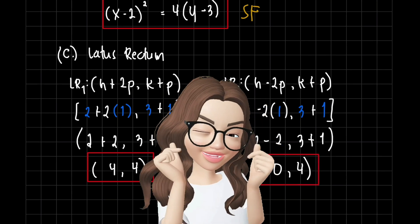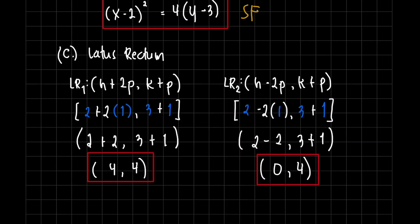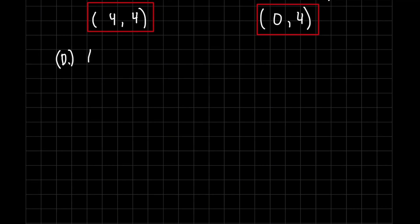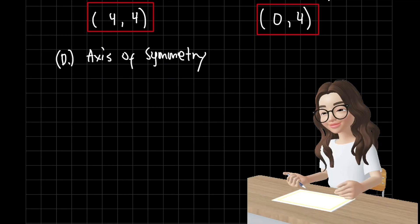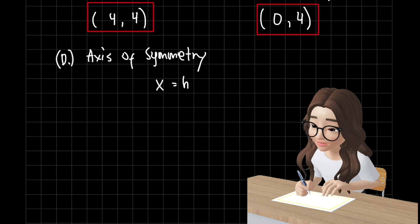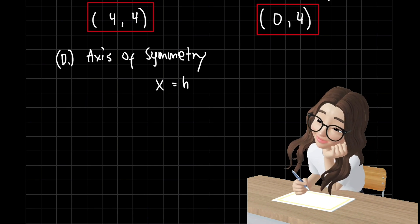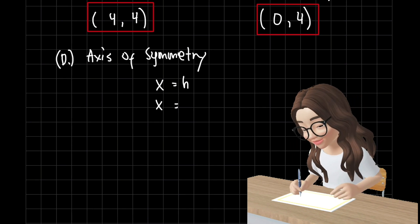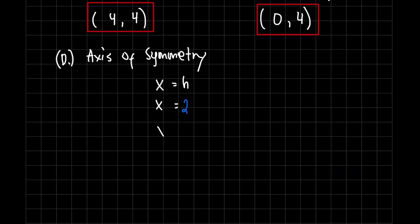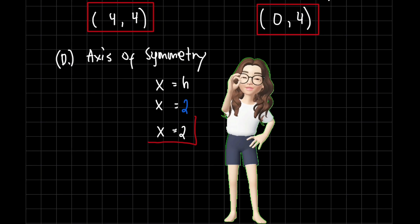Next, let us determine the axis of symmetry. From summary table number 3, we have x equals h. Substituting h equals 2, we get x equals 2. That is our axis of symmetry.